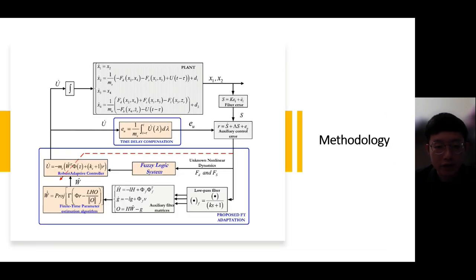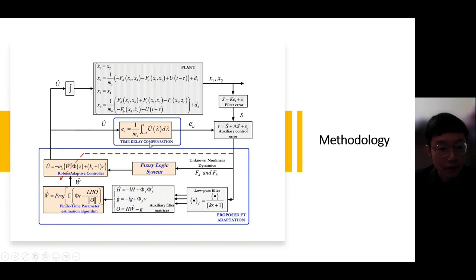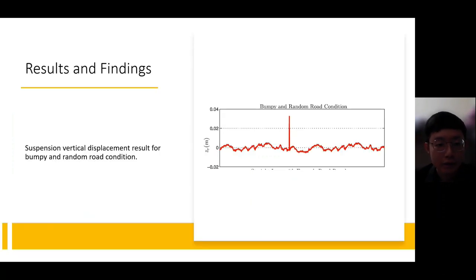Next is the methodology. This is the block diagram of the system. They include two error filters which are used to reduce the judgment error of the suspension system. The time delay compensation block is used to predict and reduce the input delay, and they include the fuzzy logic system, as well as the robust adaptive controller, which is the main algorithm to reduce the input delay. Using car sim and MATLAB Simulink, the vertical displacement result for bumpy road and random road conditions has improved.